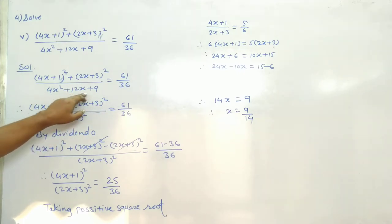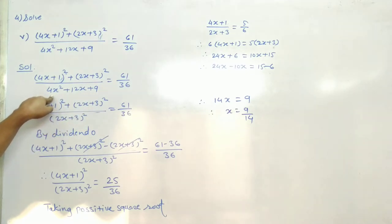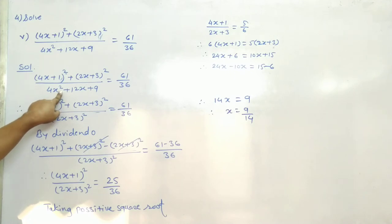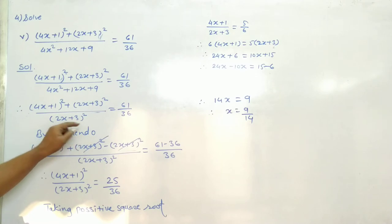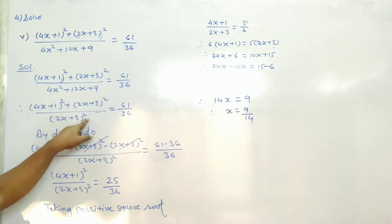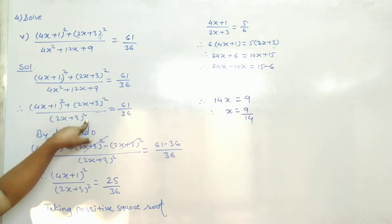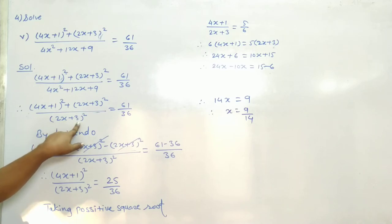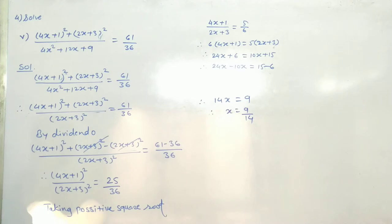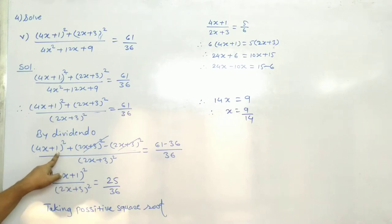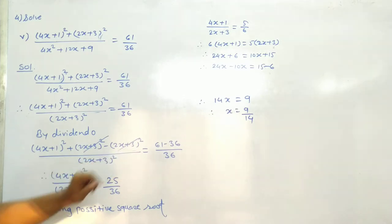Now this term is 4x² + 12x + 9. The first term is a perfect square number, and the last term is also a perfect square number. The square root of 4x² is 2x, and 9 is the whole bracket square. So 4x² + 12x + 9 equals (2x+3)².